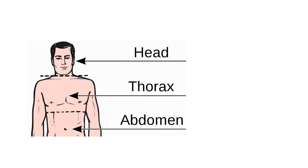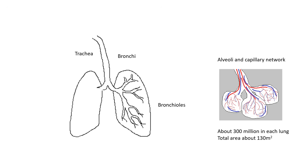Pretty basic stuff. That's your head. Then you've got your chest, which is your thorax, and then underneath that is your abdomen, and that's where all your guts and stuff are. This video is about what goes on in the thorax, which is your chest, and in particular, your lungs.